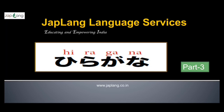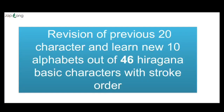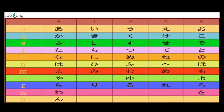Welcome back to Japan Language Services YouTube channel where we are learning Hiragana. This is Part 3. In today's video we will be revising the previous 20 characters and learn 10 new alphabets out of 46 Hiragana basic characters with stroke order. We combine consonants and vowels — the top row is your vowels A, I, U, E, O, and then the consonants follow. Today we will be learning the next 10 characters: the NA group and the HA group.